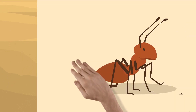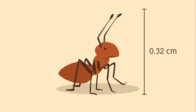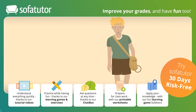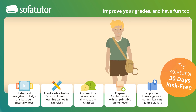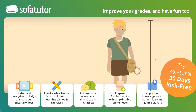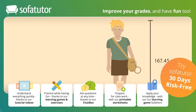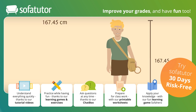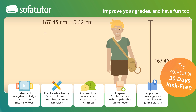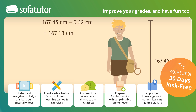Hans measures 0.32 centimeters. From Hans's perspective, David is a giant. David measures 167.45 centimeters. Subtracting isn't so instructive — 167.45 minus 0.32 is 167.13 centimeters — but that doesn't tell us much.